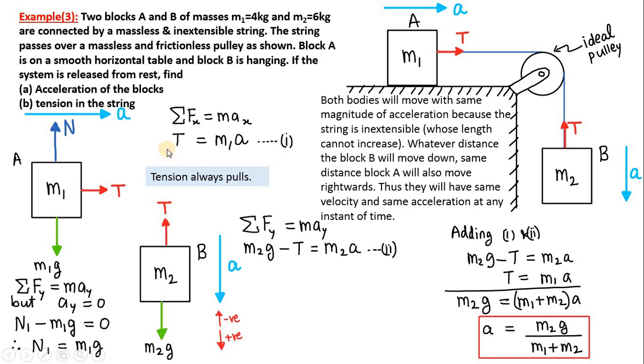Next we need to find out what is the tension in the string. We can take the first equation, so from the first equation T = M1 a. Here substitute the value of a and you will get T equals M1 M2 G divided by M1 plus M2. In this manner we have seen how easy it is to solve such type of block problems.